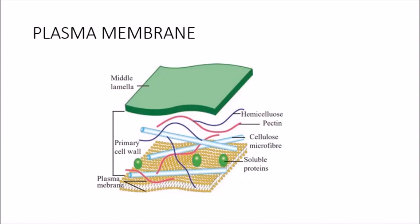It is like a sieve which helps the entry of water, salt, and oxygen, and does not allow unwanted substances to enter into the cell. From inside the cell, whatever things are not required exit the cell through the plasma membrane. In short, it maintains homeostasis. The plasma membrane is present in all types of cells — plant cells and animal cells.